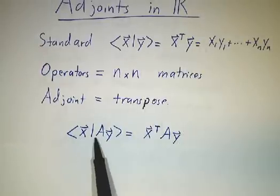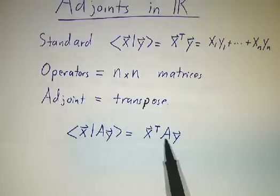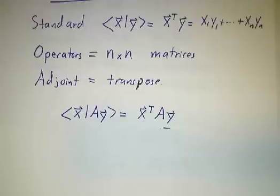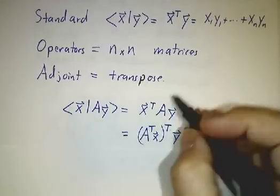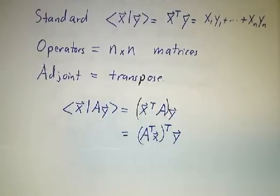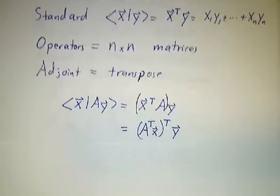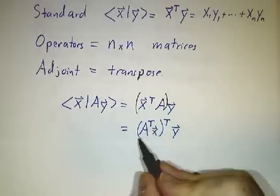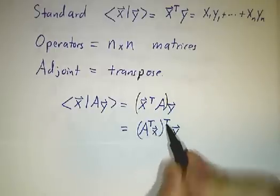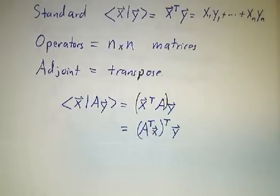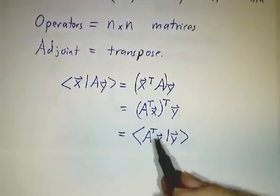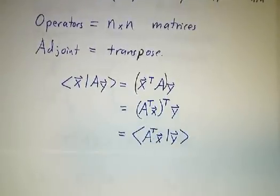So the inner product of x with Ay is x-transpose times Ay. But you can think of that as x-transpose A times y, and x-transpose A is A-transpose x-transpose. And so this is the inner product of A-transpose x with y.